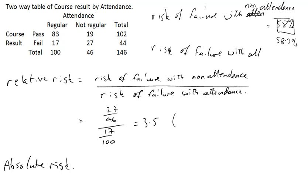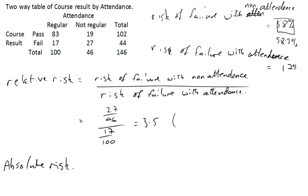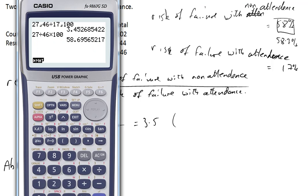And the risk of failure with attendance is 17 percent. No big calculation there, 17 out of 100. So the absolute risk is 58.7 minus 17.